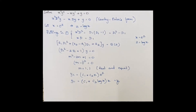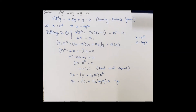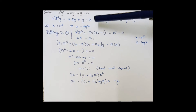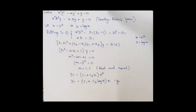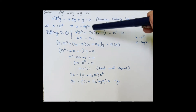Let's learn an example. The question is: x²y'' - xy' + y = 0. Applying the operator D (which is d/dx), we get x²D²y - xDy + y = 0. This is in Cauchy-Euler form, so we substitute x = e^z, giving z = log x.